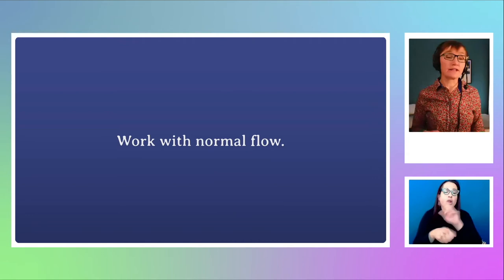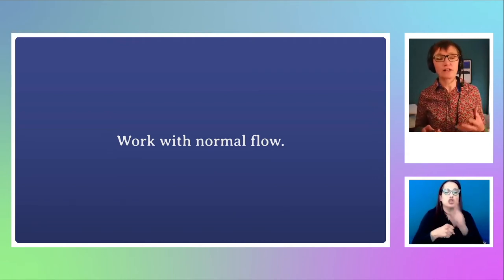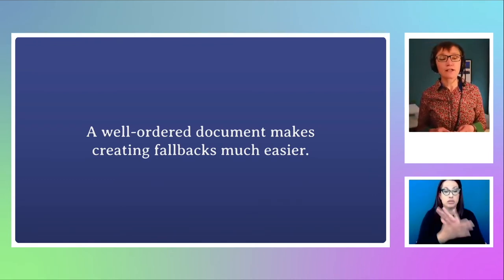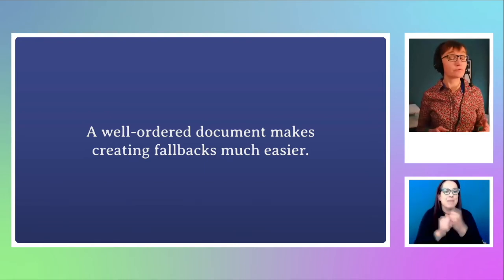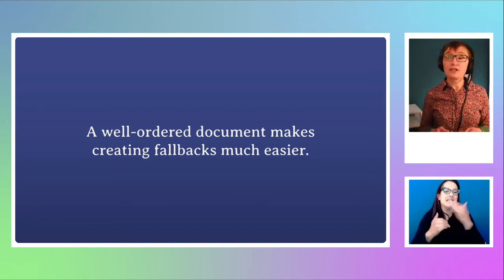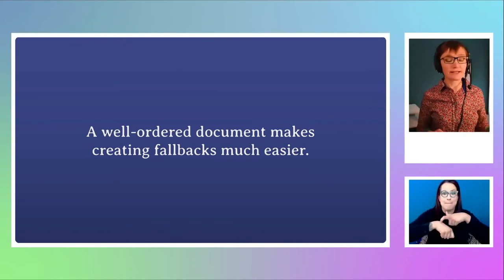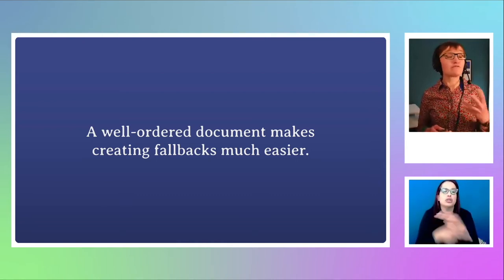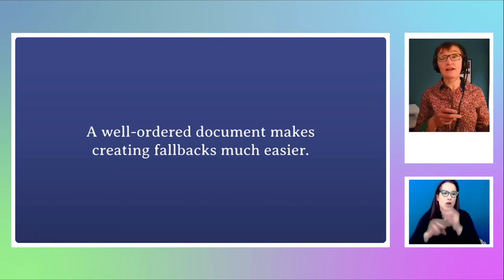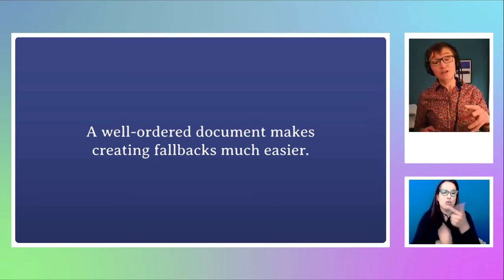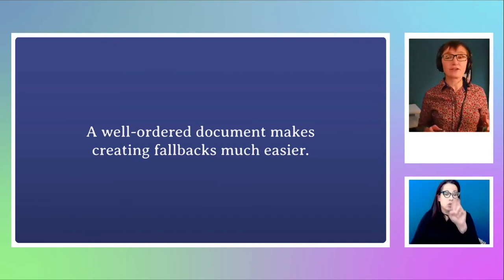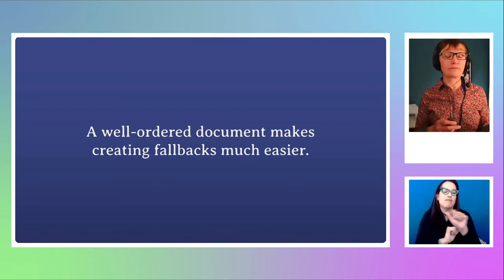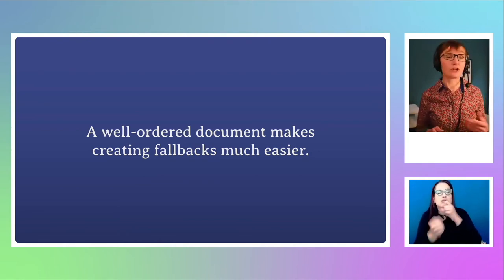Working with normal flow, working with your structured document, can actually save you an awful lot of time. Working with normal flow also makes your life easier and ensures that the experience is relatively fluid for people using the document. Something else about having a good document and working with normal flow is it actually makes creating fallbacks a lot easier for older browsers that don't support Grid. You can use the cascade to overwrite older layout methods — float some items and then overwrite them with Grid. To do that floated layout, source order is really important because that's all you've got with floats.